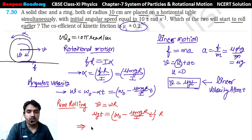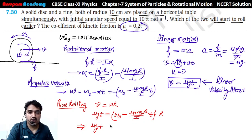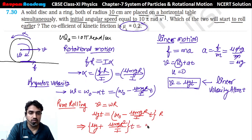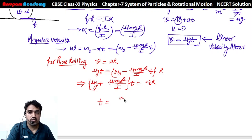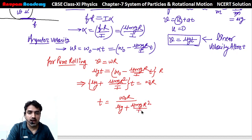Setting v = omega·r: mu·g·t = [omega₀ - (mu·mg·r / I)·t] · r. Taking t common: t · [mu·g + mu·mg·r² / I] = omega₀·r. So t = omega₀·r / [mu·g + mu·mg·r² / I].